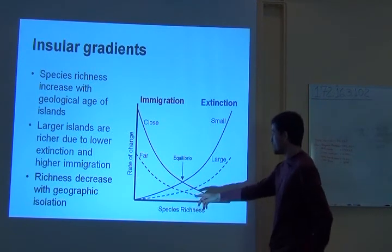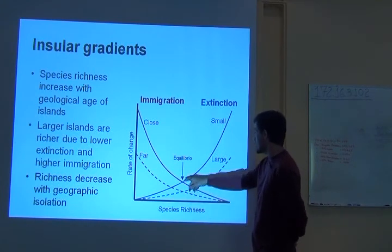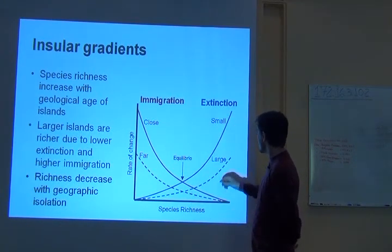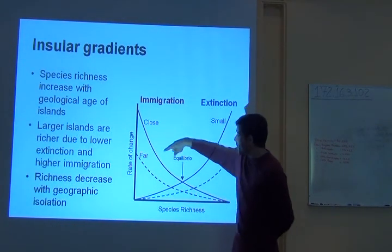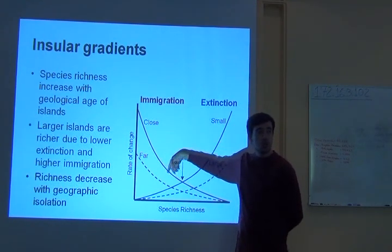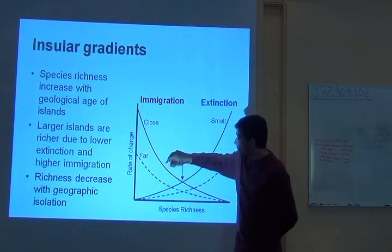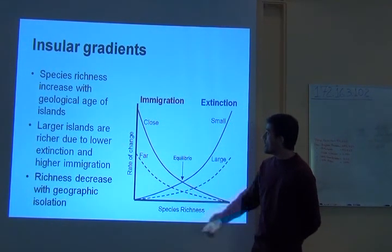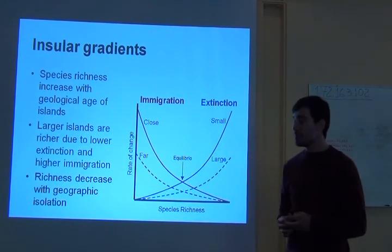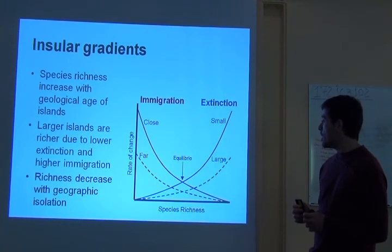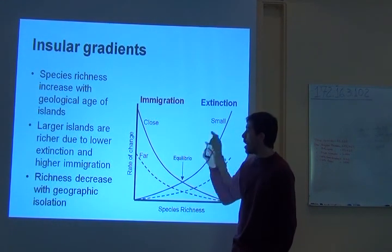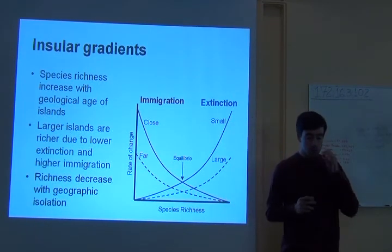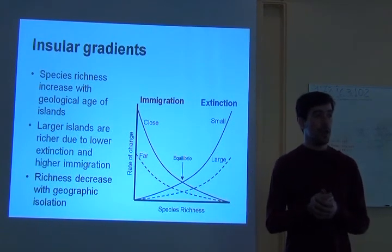Species richness tends to be higher on larger islands because extinction tends to increase on smaller islands. Immigration tends to increase when the island is closer to a mainland or a source of immigrants; when the island is far away, immigration becomes less intense. So isolation, extinction, immigration, and island size are all related to the species richness we find on a single island.